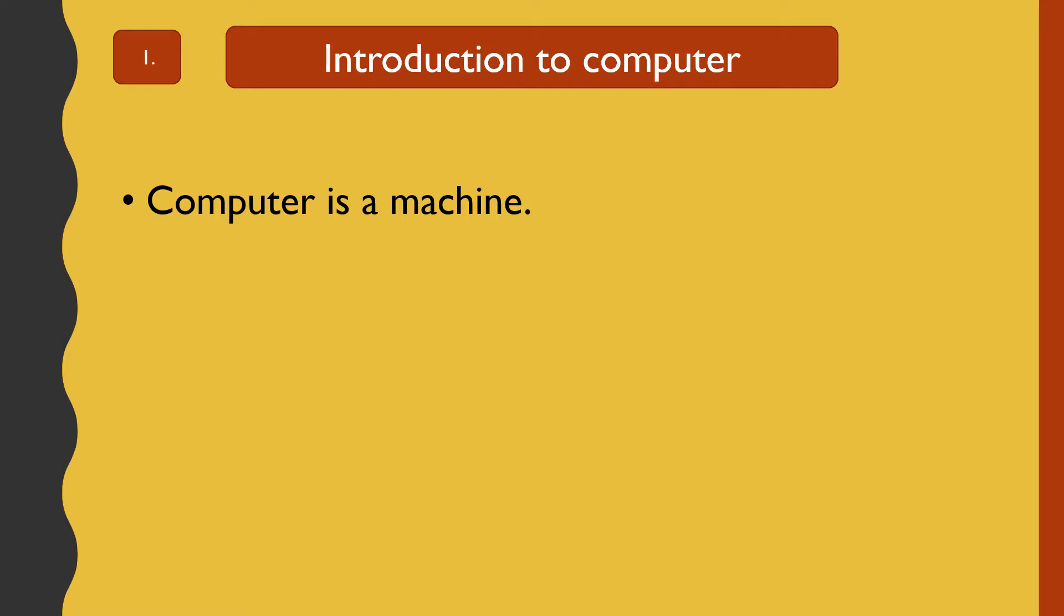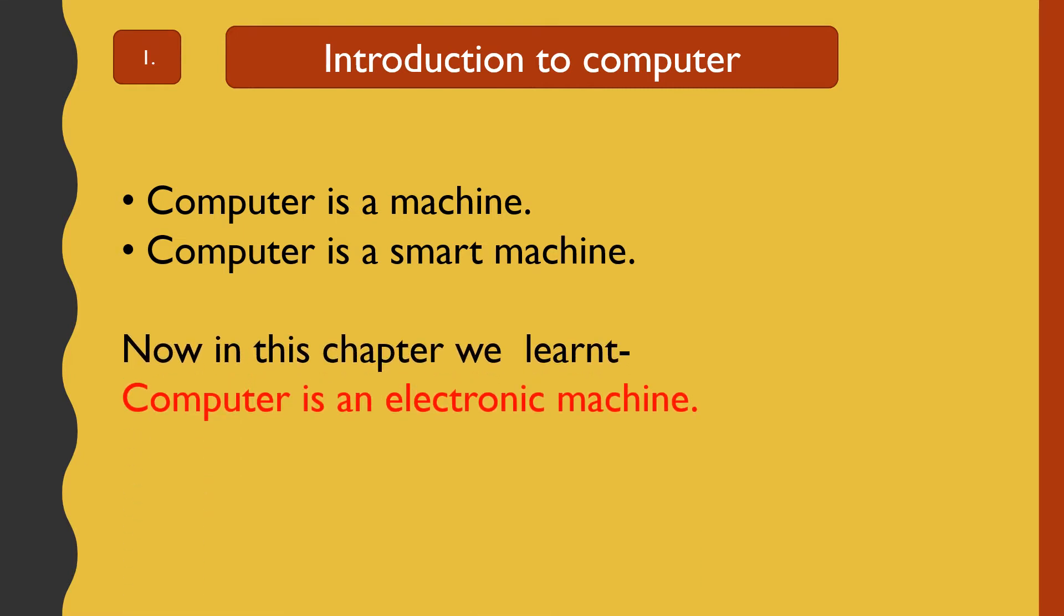What is a computer? Computer is a machine. Computer is a smart machine. In this chapter we learned computer is an electronic machine.